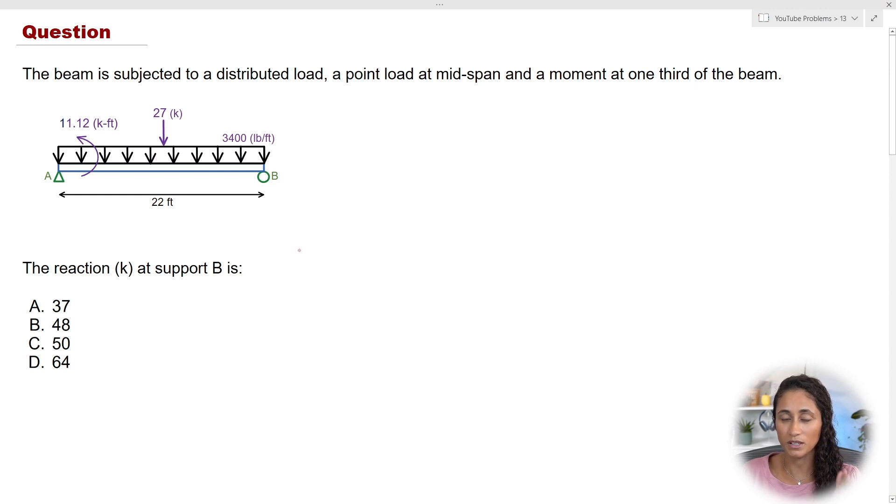So this is what we have. A beam is subjected to a distributed load, a point load at mid-span, and a moment at one-third of the beam. And we want to find the reaction in kips at support B.